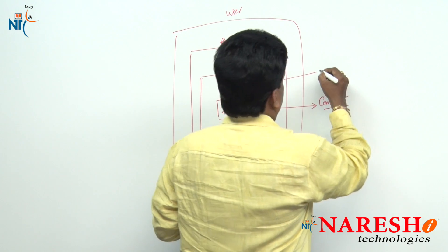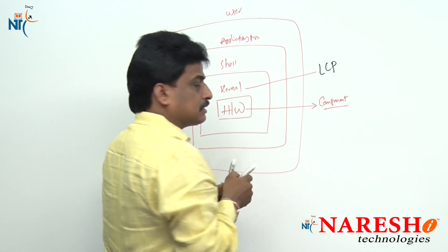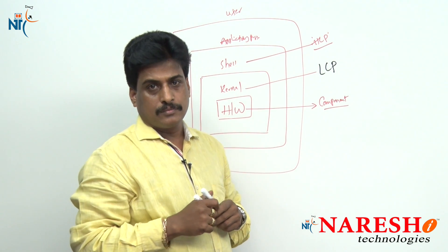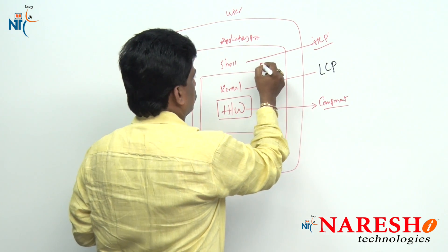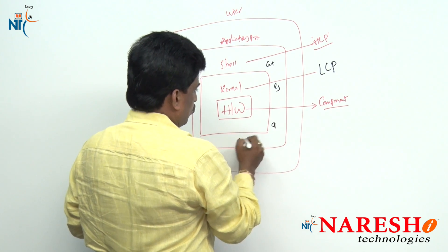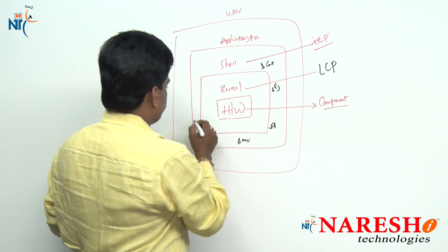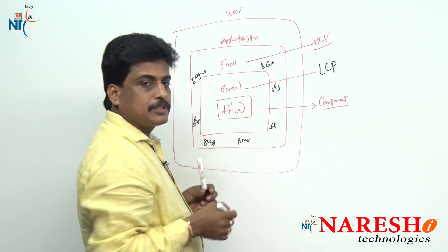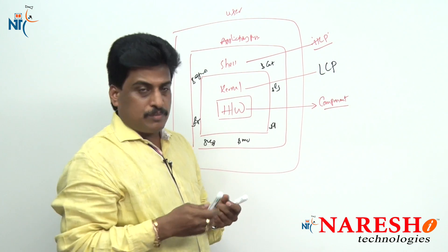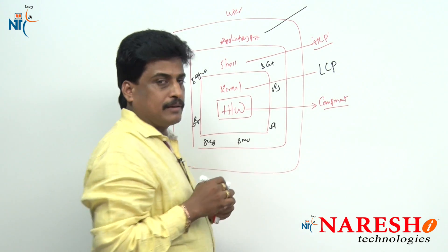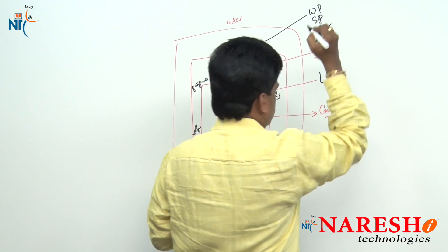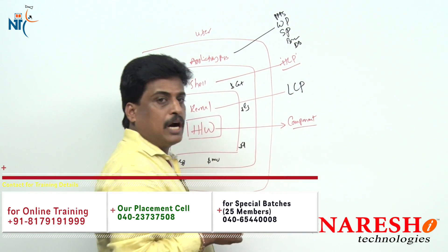Next is shell, which is high-level programming. A collection of Unix commands is called shell. In the shell programming area, commands available in Unix include cat, ls, cp, mv, grep, fgrep, egrep — all these come under shell. Shell is also classified into different types. Application programs are those which satisfy end user requirements — like word processors, spreadsheets, browsers, databases, and PowerPoint presentations.